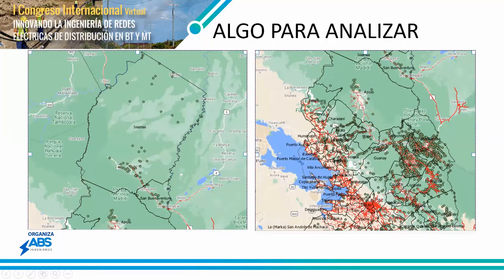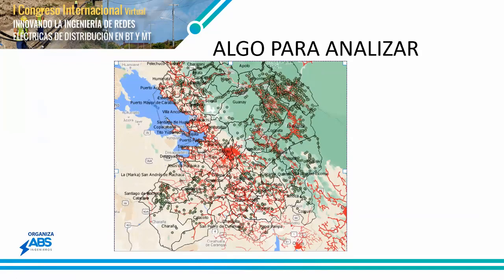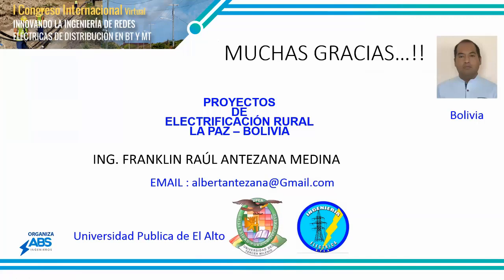También hay otra parte de electrificación rural donde hay más comunidades y más redes eléctricas porque hay más accesibilidad y más caminos. Esta es la parte sur del departamento de La Paz — esta mancha roja es la ciudad de La Paz y la ciudad de El Alto, que tiene más certificación de redes. El altiplano en su mayor parte ya cuenta con casi el 100% de electrificación rural. Eso quería comentarles, como experiencia, y cómo se llevan los proyectos de electrificación rural en mi país.